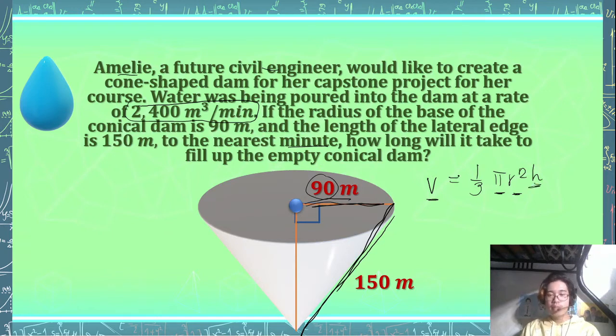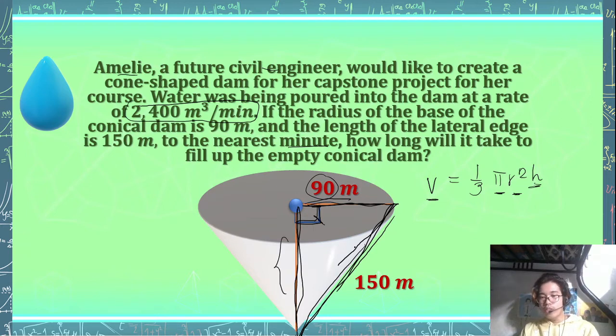For this problem, dear students, the height is missing. So how can we get the value of the height if we know that we have here a right triangle connecting the lateral edge and the radius together? At this part, we can find the height. If this is a right angle, therefore this must be the hypotenuse of our right angle, and this must be one of the side measurements. So therefore, using the Pythagorean theorem...